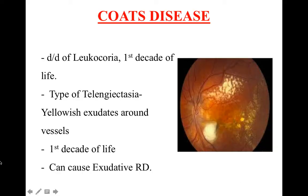Our topic is Coats' disease. As you can see in this picture, there are exudates around the blood vessels. The most important and characteristic feature of Coats' disease is exudates around the blood vessels. These exudates are more prominent on the temporal side, with some also visible inferiorly, but they start from the temporal side.